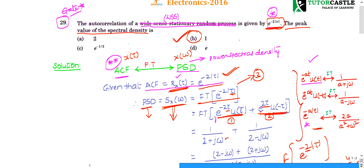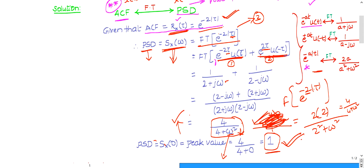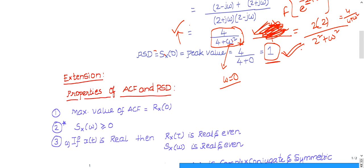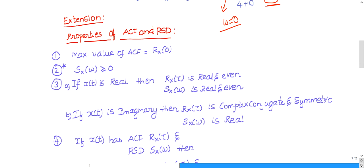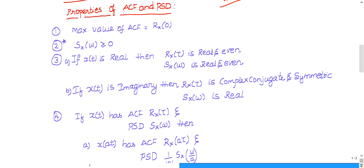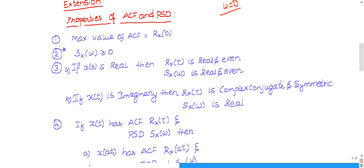Initially ISRA gave a wrong answer key, but later they revised it. The final correct answer is option B. Now let us look at some very important properties of autocorrelation function and power spectral density.